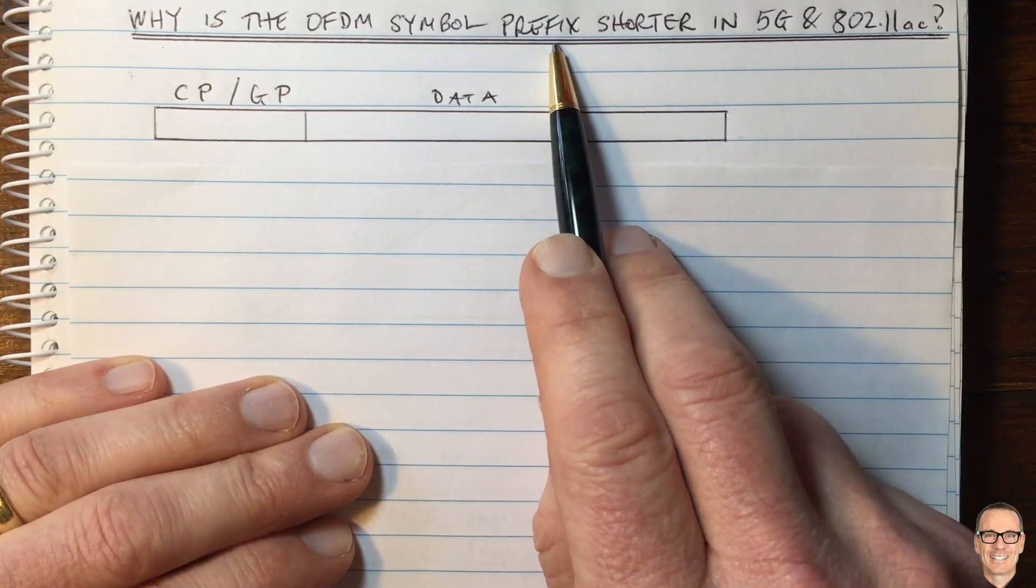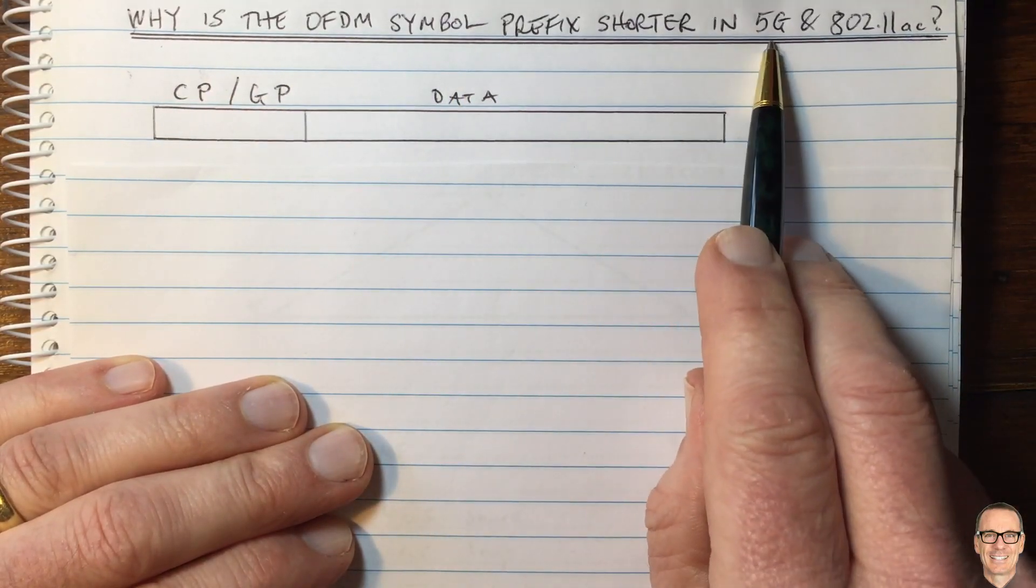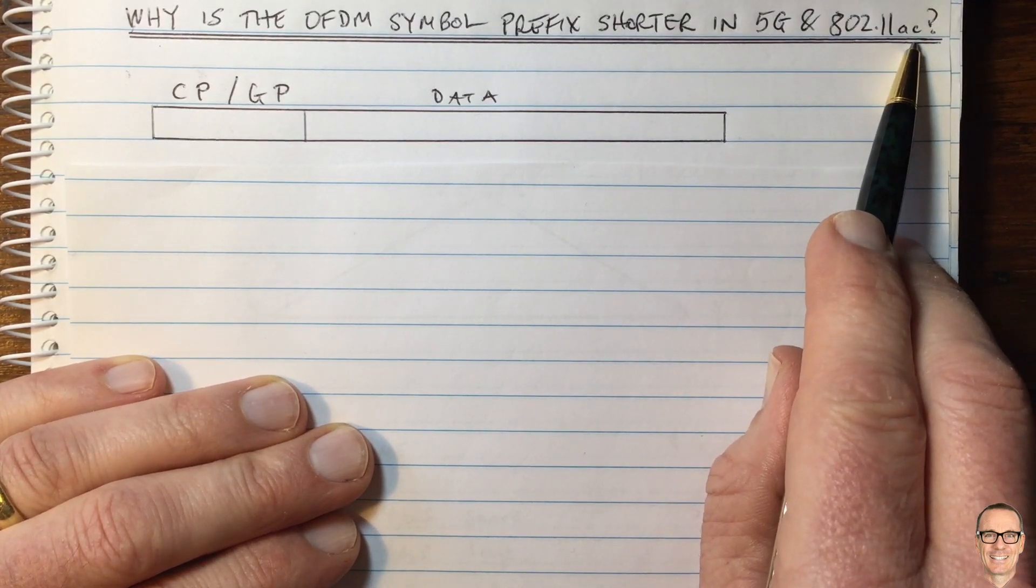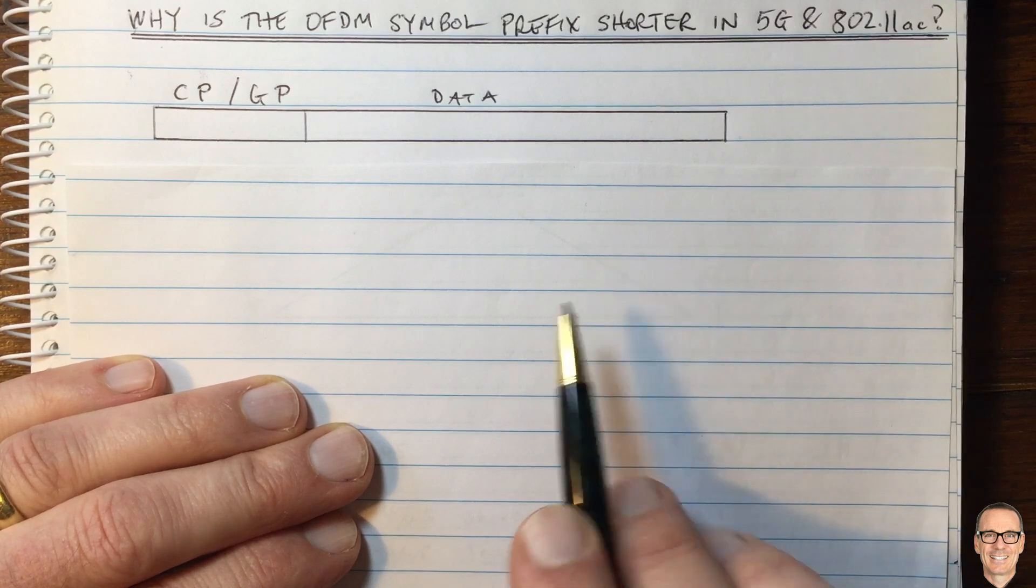Why is the OFDM symbol prefix shorter in the 5G mobile standard and the 802.11ac Wi-Fi standard compared with previous standards?